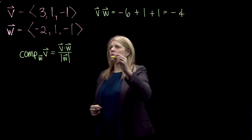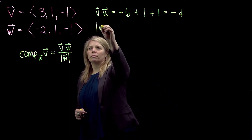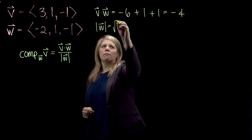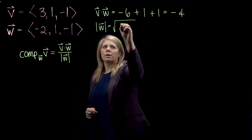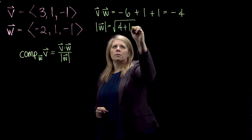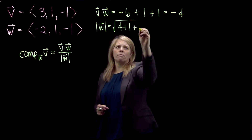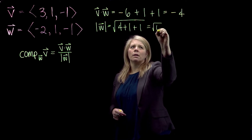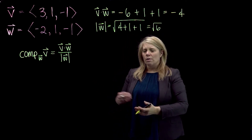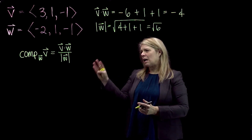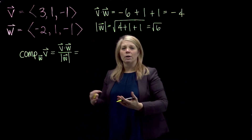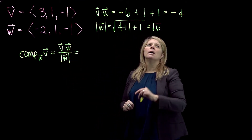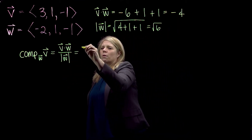I also need the magnitude of W: the square root of negative 2 squared (4) plus 1 squared (1) plus negative 1 squared (1), giving the square root of 6. So the component of V along W — sometimes called the scalar component of V along W — is negative 4 over the square root of 6.